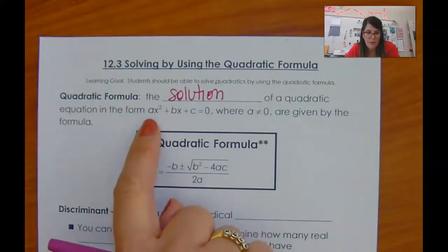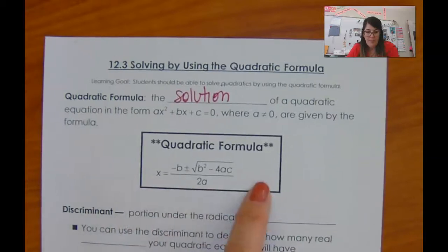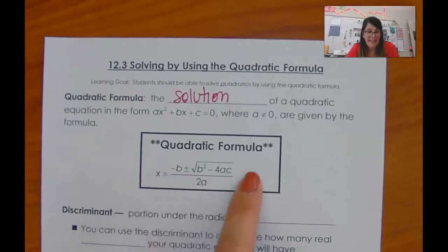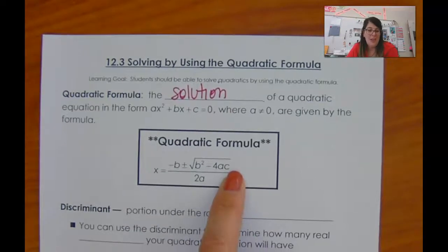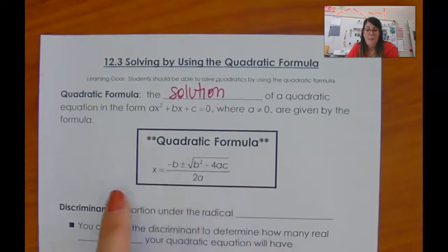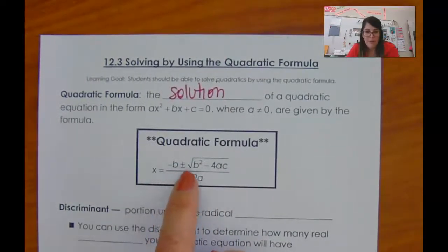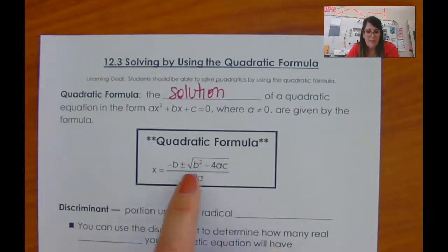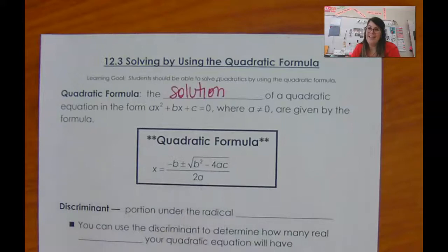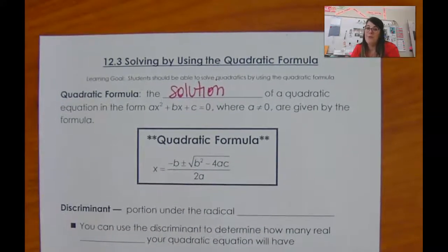So whenever you have an x squared, you can solve this by plugging into the formula. You can use your calculator, but understand it's negative b plus or minus the square root of b squared minus 4ac, all over 2a. I wish I could sing — I can't — so I really want you to watch that video.